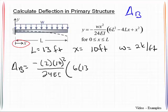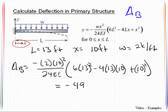6 times 13 squared minus 4 times 13 times 10 plus 10 squared, and this is equal to negative 4950 over EI. Okay, so that's delta B.